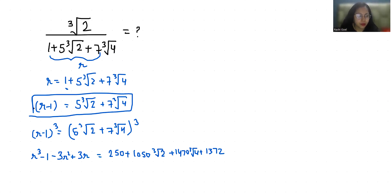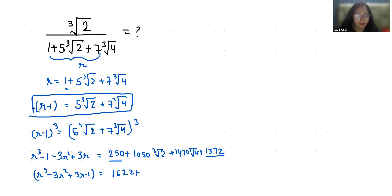So R cubed minus 3ab squared plus 3ab minus 1 equals this right-hand side. When we add, the 1 shifts to give 2 plus the remaining terms. Now R cubed — I'm going to take the negative 1 to the other side.